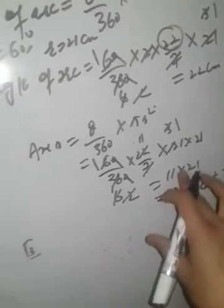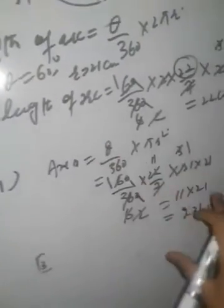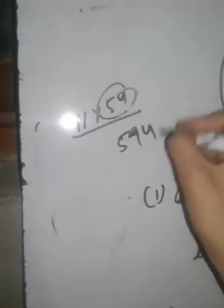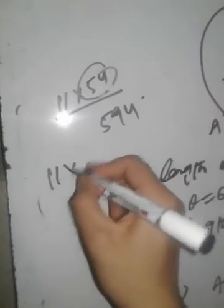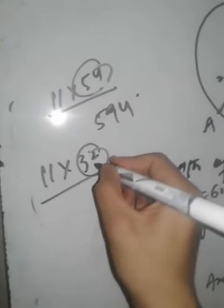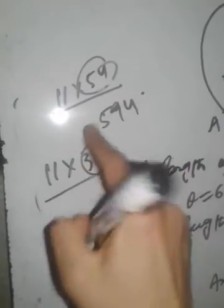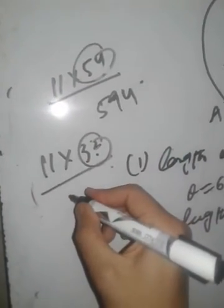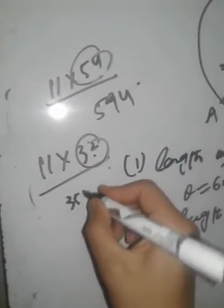I will show a shortcut for multiplication by 11. For example, 11 into 54: add 5 plus 4 which is 9, put 9 between 5 and 4, giving 594. Similarly, 11 into 32: 3 plus 2 is 5, put 5 between 3 and 2, giving 352. I hope you will get this trick.